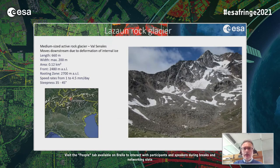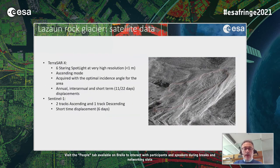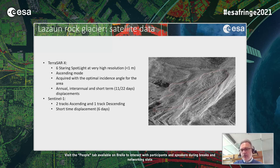The first test area is the Lazaun rock glacier in Valsenales in the western part of South Tirol — a medium-sized active rock glacier that moves downstream due to deformation of internal ice. The extent is 0.5 to 1.2 square kilometers and speed rates go from 1 to 4.5 millimeters per day. We had the opportunity to plan and acquire six staring spotlight TerraSAR-X scenes at very high resolution — less than one meter — in ascending mode, selecting the beam with the best incidence angle for the topography of interest.